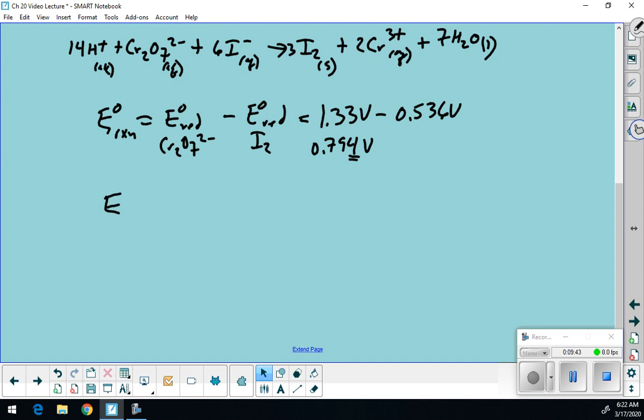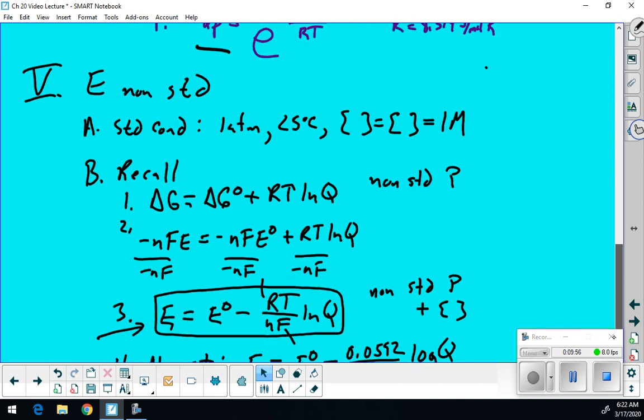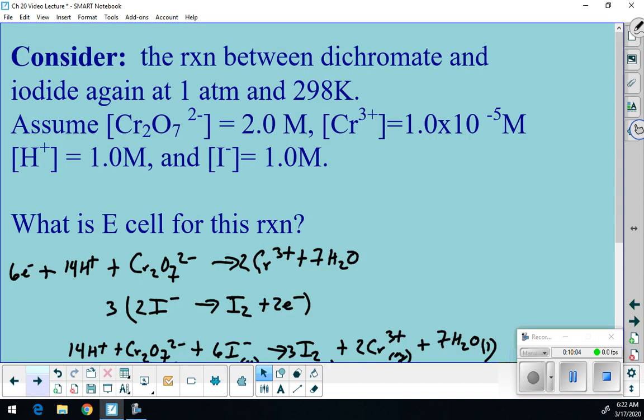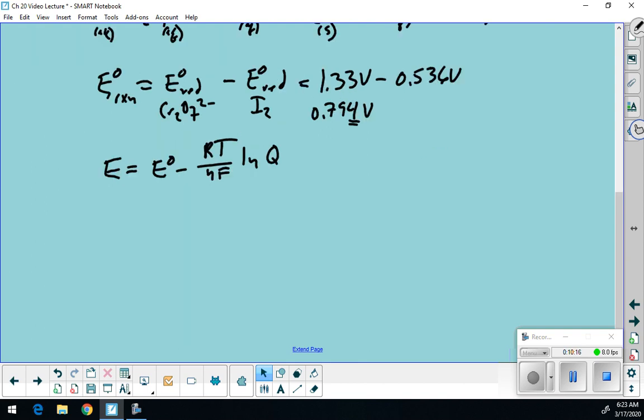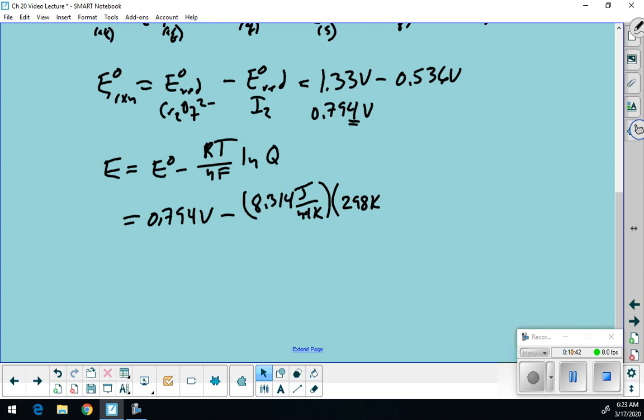Let's look at our Nernst. Our Nernst said what? E is equal to E prime minus RT over nF natural log of Q. So that would mean I'm going to take my 0.794 volts minus R, 8.314 joules per mole Kelvin, times my T. We said it was 298, right? 298K over n.